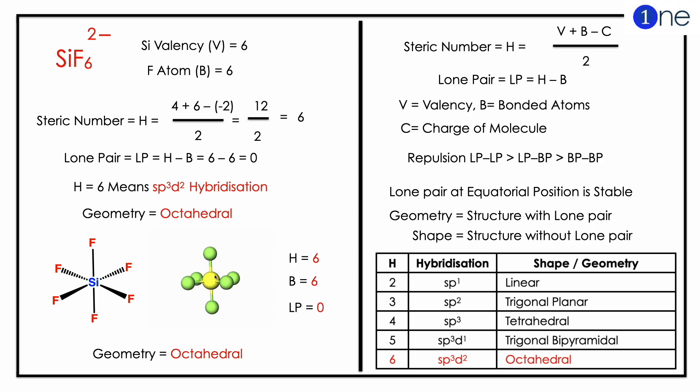To find the hybridization, you should know the steric number, which is H equals V plus B minus C, divided by 2, where silicon valency is 6 and fluorine atoms are 6.